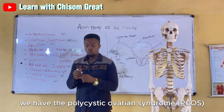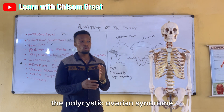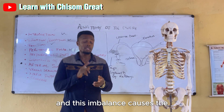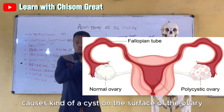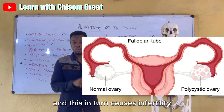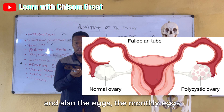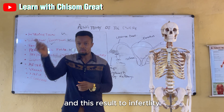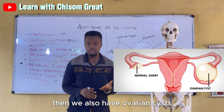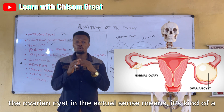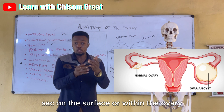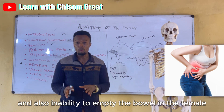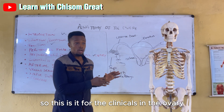Clinically, we have polycystic ovarian syndrome (PCOS), which is an imbalance in androgens or hormones that causes cysts on the surface of the ovary, leading to infertility and stopping or slowing ovulation. We also have ovarian cysts, which are solid or fluid-like sacs on the surface or within the ovary, causing pelvic pain, abdominal pain, and inability to empty the bowel.